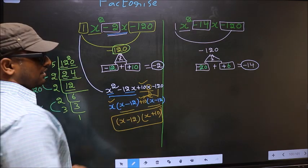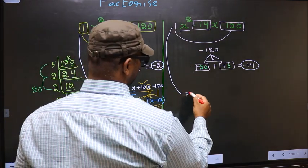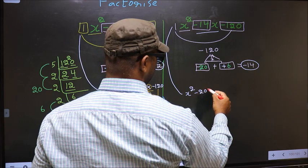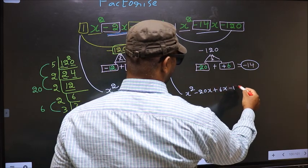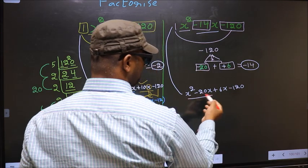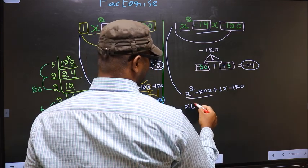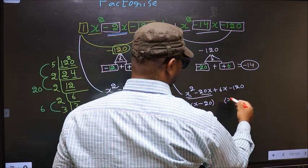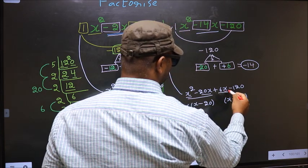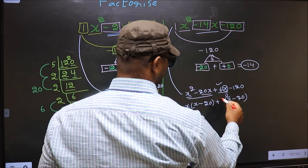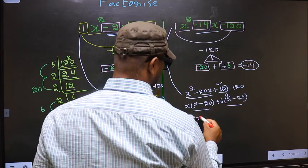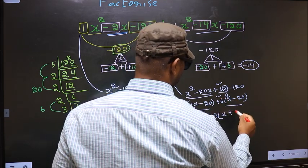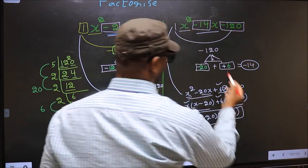For the second expression, change it to x squared, and in place of minus 14x write minus 20x plus 6x, giving x squared minus 20x plus 6x minus 120. From the first two terms, take out common factor x: x times (x minus 20). From the last two terms, x has gone inside, so outside you get plus 6. Now take out (x minus 20) common — you get (x minus 20)(x plus 6). This is the answer.